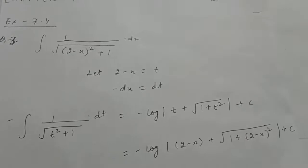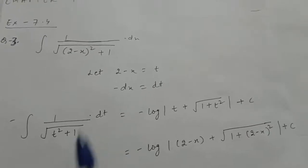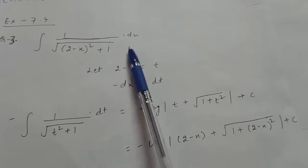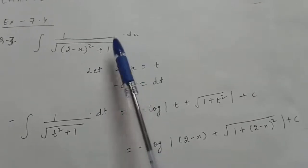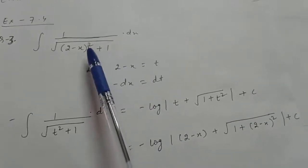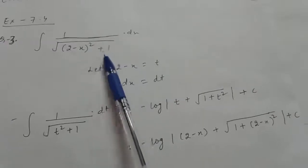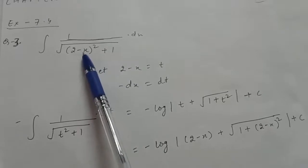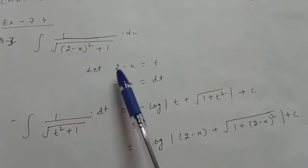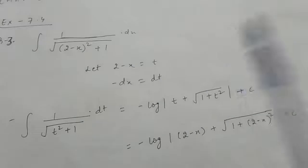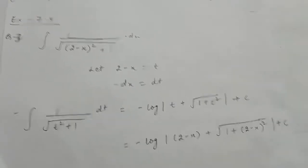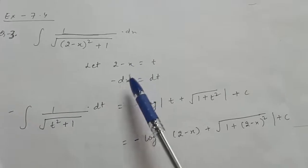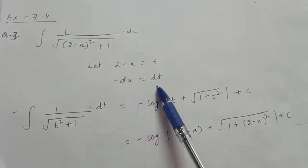Question 3rd is the integral of 1 upon root of (2 minus x) whole square plus 1, dx. We cannot apply the formula of 1 upon root (x² + a²) directly because here the coefficient of x is minus 1. Therefore let 2 minus x equal to t, so the derivative gives minus dx equal to dt.